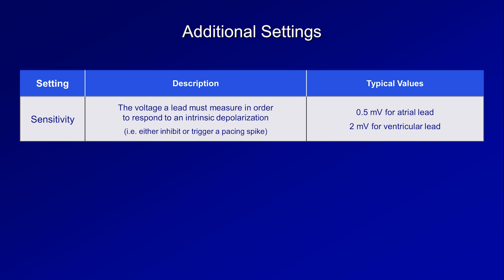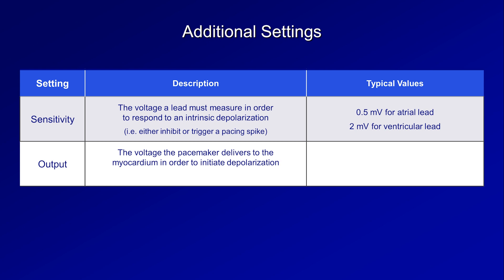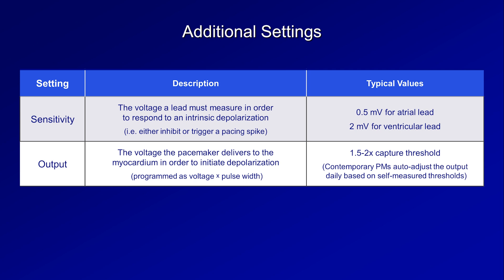In contrast to all other settings discussed, lead sensitivities are usually not changed once the pacemaker has been implanted. The output is the voltage the pacemaker delivers to the myocardium to pace the heart. The ability to initiate depolarization depends on both voltage and pulse width — the higher the voltage, the shorter the pulse width needs to be. Output should be high enough to pace 100% of the time the pacemaker intends to, but not so high as to unnecessarily waste battery life. Typical output is 1.5 to 2 times the threshold at which the pacemaker can initiate depolarization, known as capturing the heart. Contemporary pacemakers auto-adjust output daily based on self-measured thresholds to ensure capture.